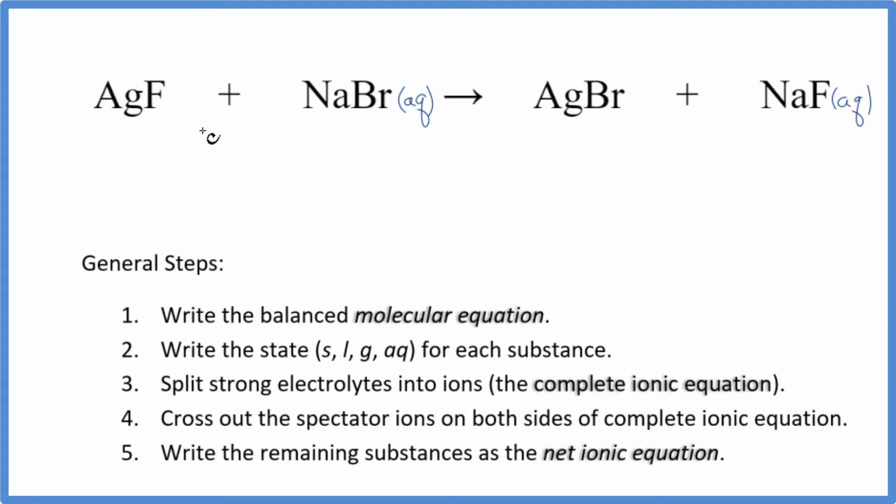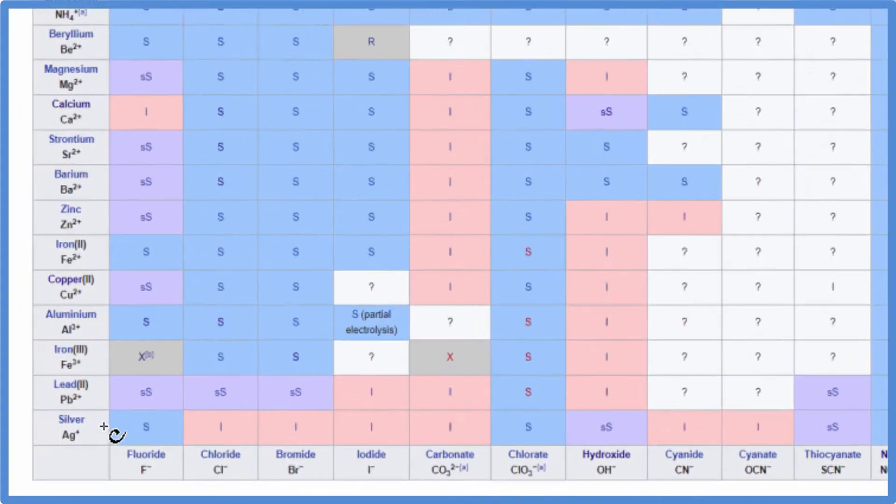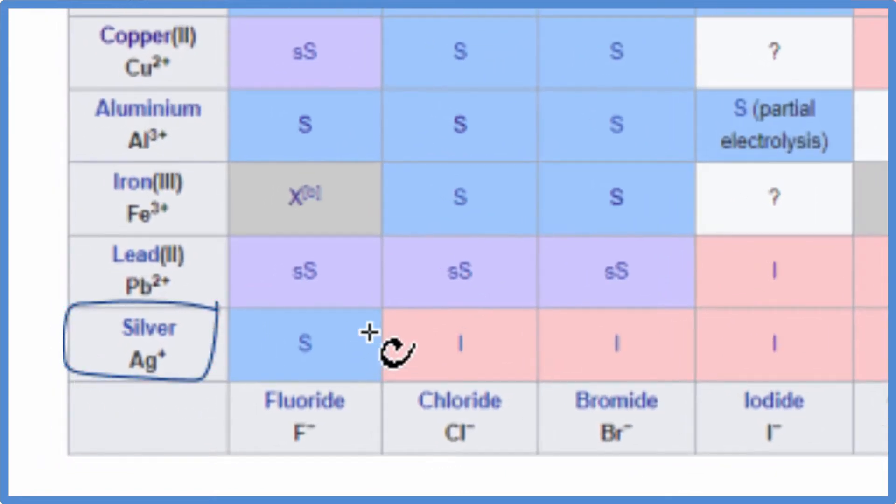So let's look at a solubility table and check AgF and AgBr. On the table here, we find silver right here and then F, that's the fluoride ion. So when we go across, that S means it's soluble. So AgF is soluble in water and it's going to be aqueous.